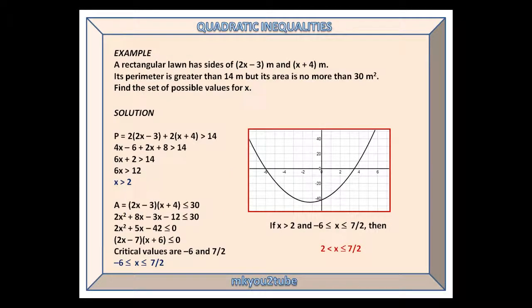We end with a contextual example. A rectangular lawn has sides of 2x minus 3 metres and x plus 4 metres. Its perimeter is greater than 14 metres, but its area is no more than 30 metres squared. Find the set of possible values for x.